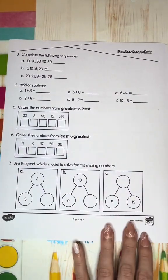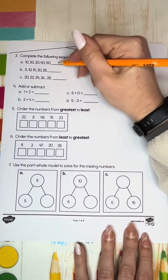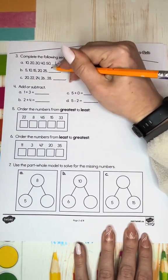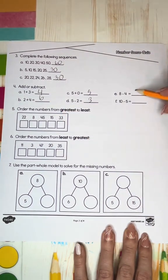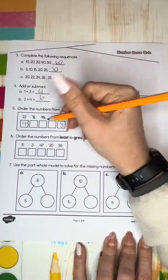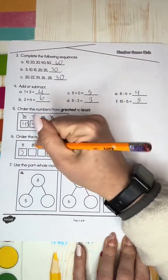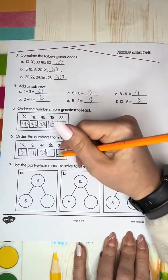Grade one number sense we were also working on sequencing and finishing patterns. In this case adding five each time, adding 10, adding two. We were also doing some basic addition and subtraction and ordering numbers from greatest to least and least to greatest. Did anybody else used to cross out so that they knew they didn't miss any?